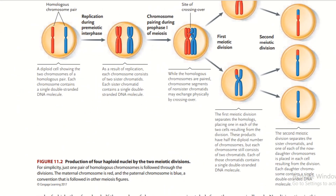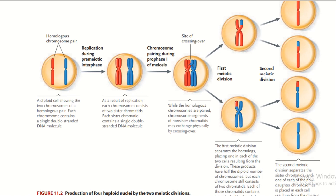For the production of four haploid nuclei by two meiotic divisions, just one pair of homologous chromosomes is followed through the division for simplicity. The maternal chromosome is red and the paternal chromosome is blue, a convention followed in other meiosis figures. Step one: a diploid cell showing the two chromosomes of each homologous pair, each chromosome containing a single double-stranded DNA molecule. As a result of replication, each chromosome consists of two sister chromatids, each containing a single double-stranded DNA molecule.